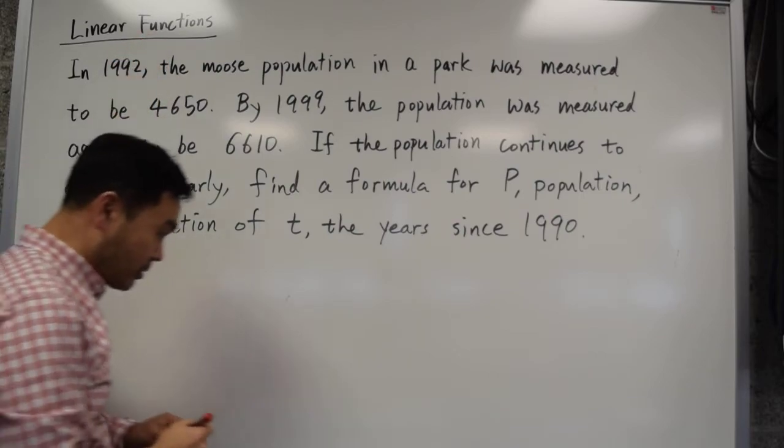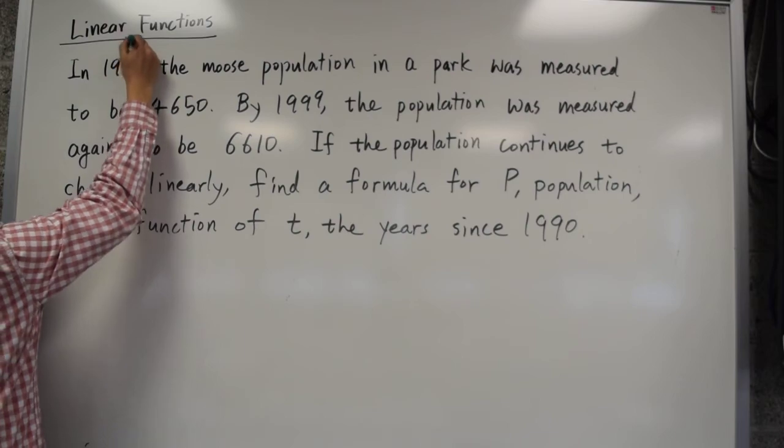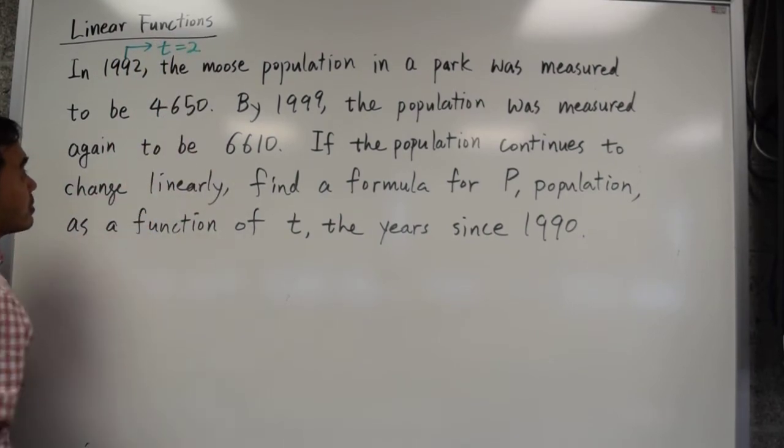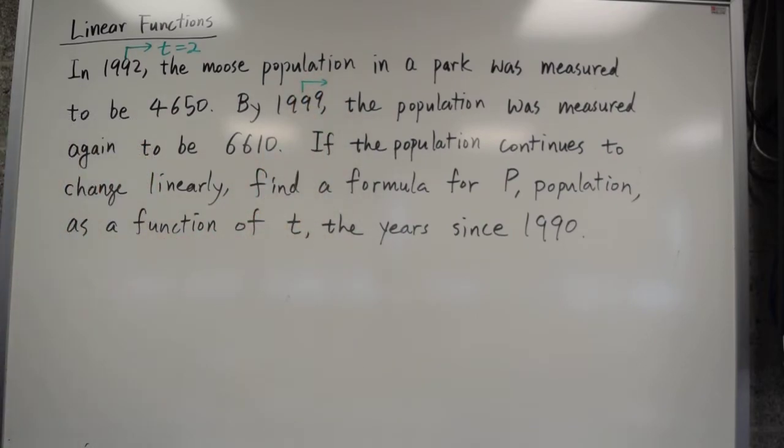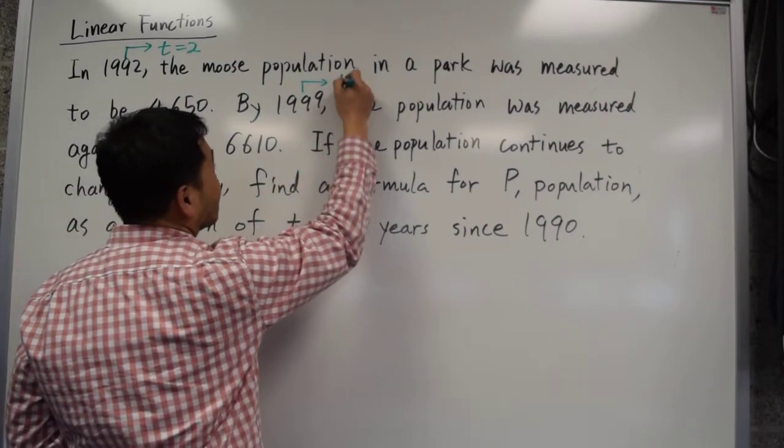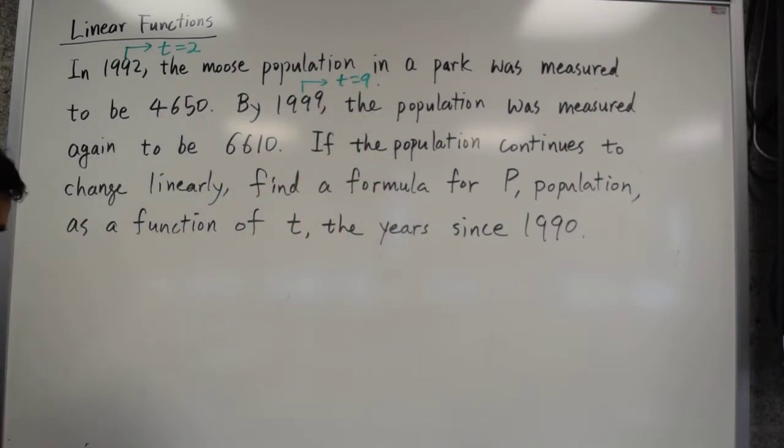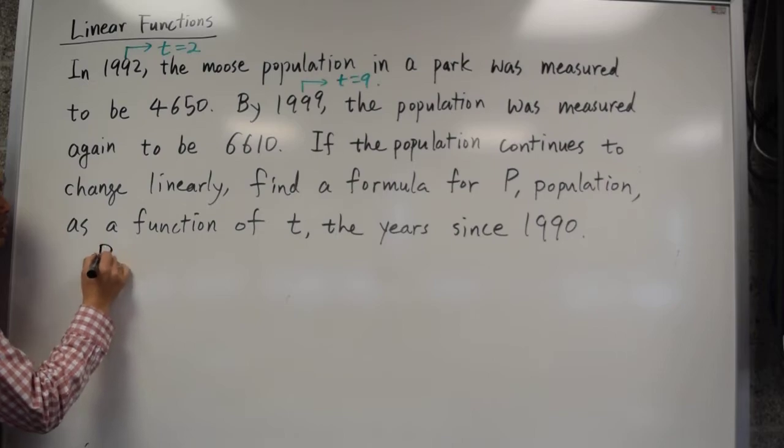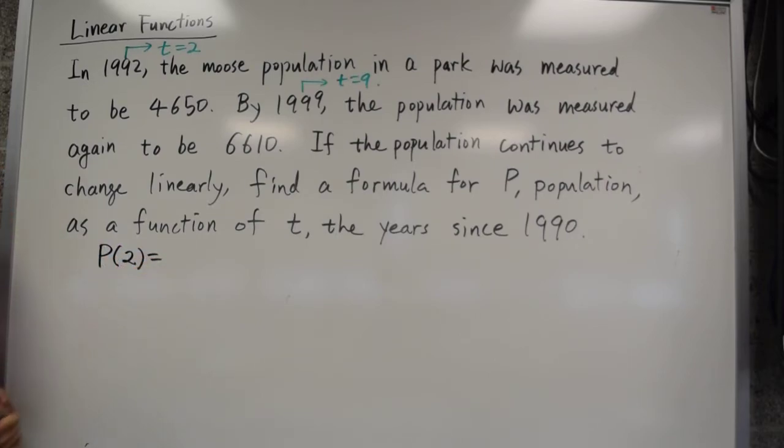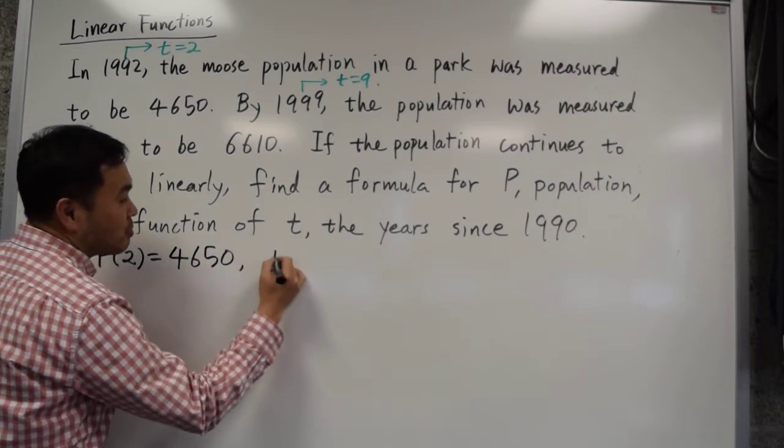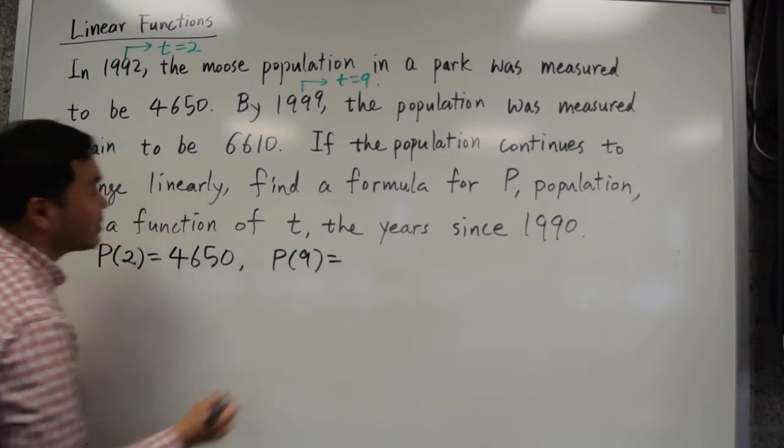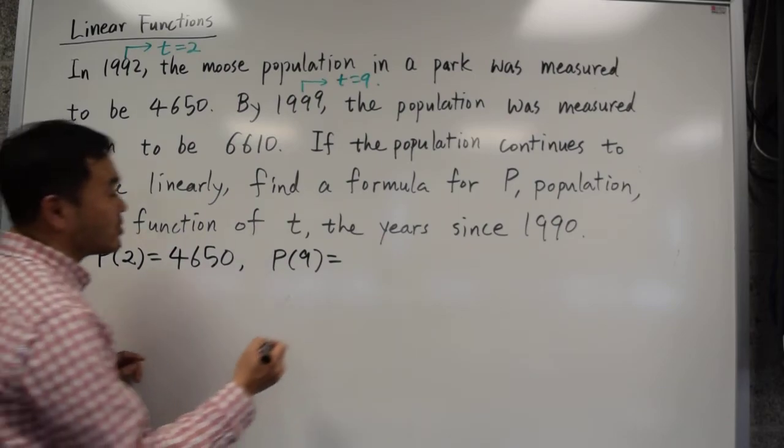So this really says, right here, t equals 2. How about this one? T equals 9. Okay, now with this information, let's see if you figured out what the data should be. P of 2 equals what? P of 2 is 4,650. P of 9 is 6,610.